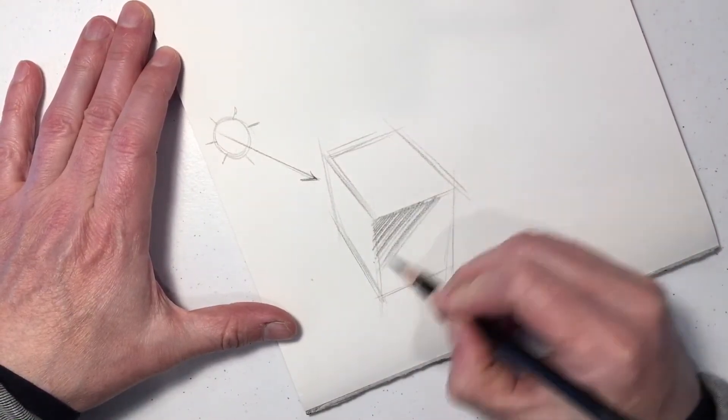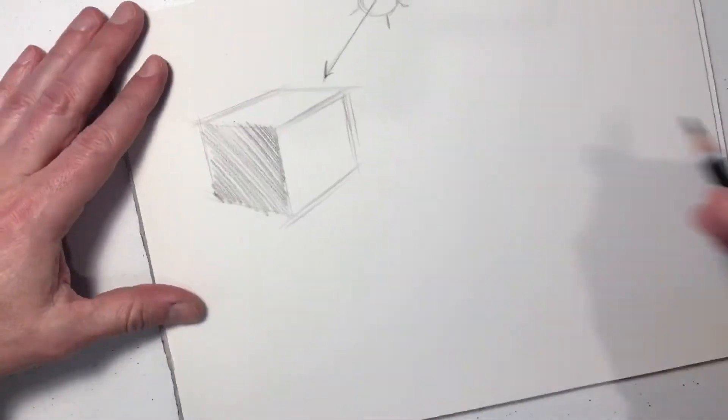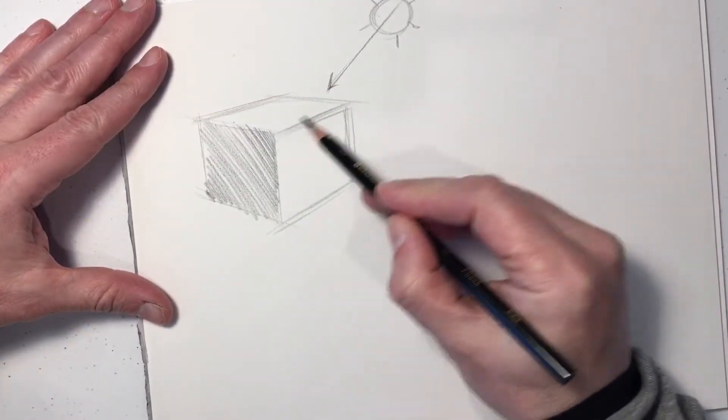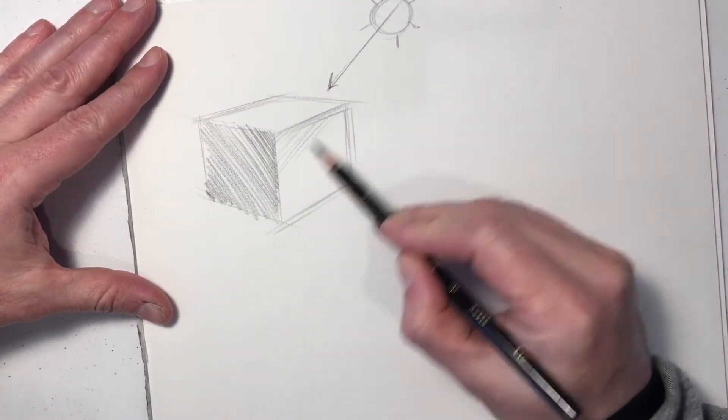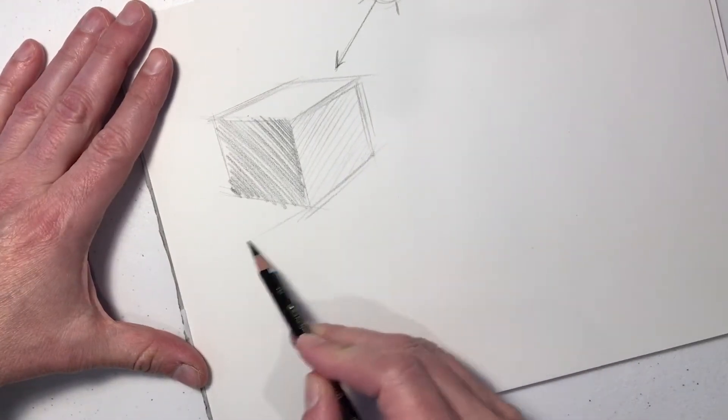We're going to start to shade the sides of the cube that are facing away from the sun. The side that's facing the most away from the sun will be the darkest. The side that's facing partially away from the sun will be slightly darker.